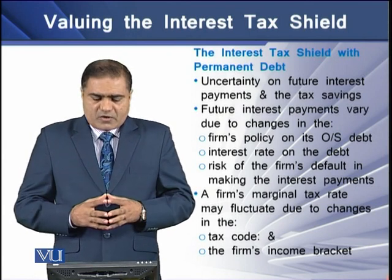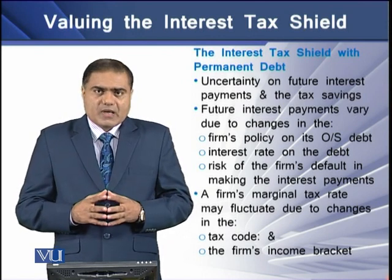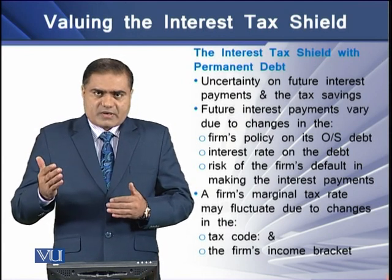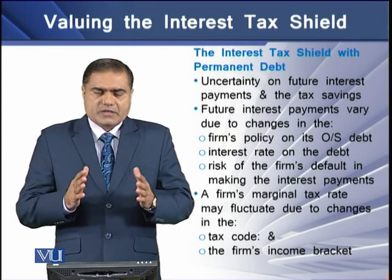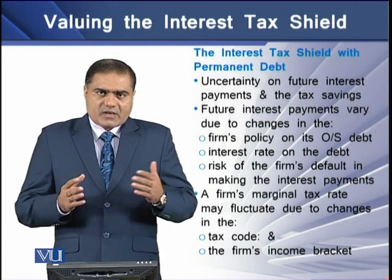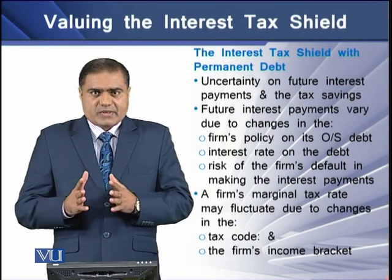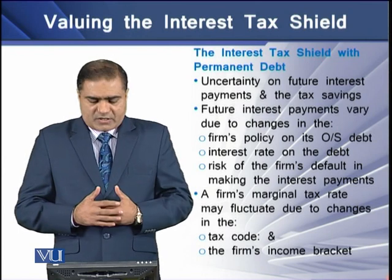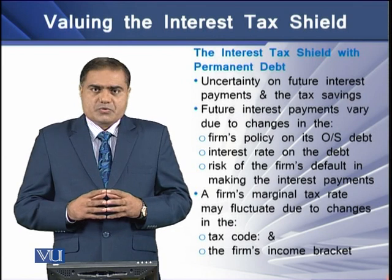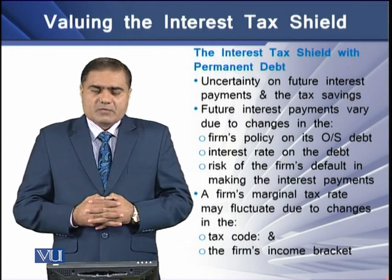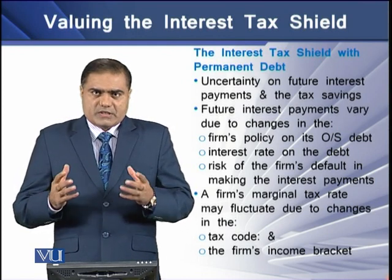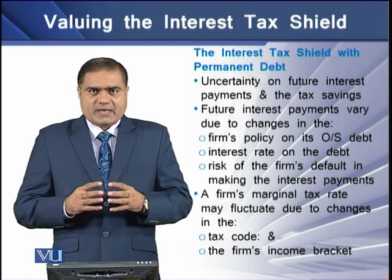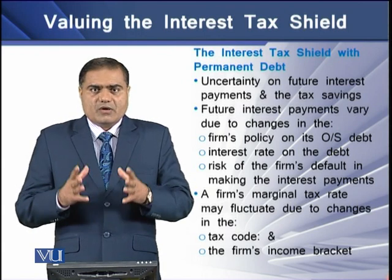If we want to determine the interest tax shield with the existence of permanent debt, we must note that until now we assumed that the interest tax shield is based on certain interest rates, tax rates, amount of debt, and debt period. But in practice these are rarely certain. Firm's interest payments vary due to changes in the firm's policy on outstanding debt, the rate of interest on the firm's debt, and the risk of the firm defaulting on interest payments. Also, a firm's marginal tax rate can be influenced by changes in the tax code and the firm's income bracket.